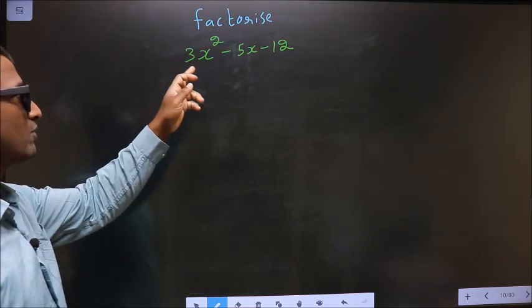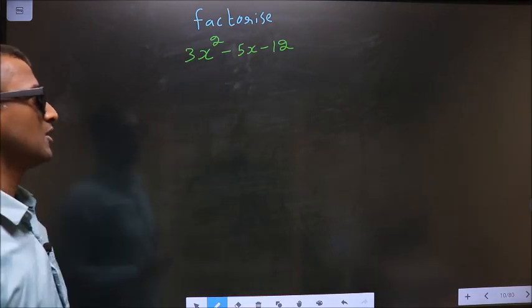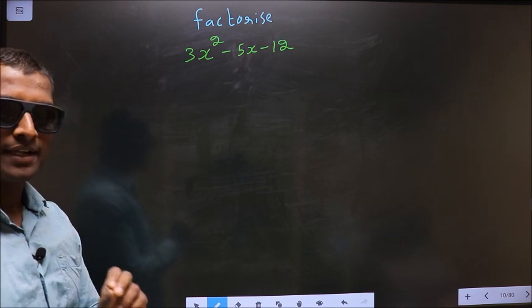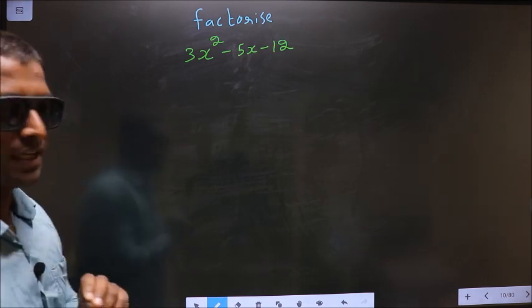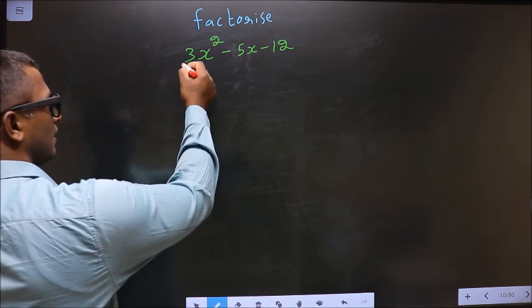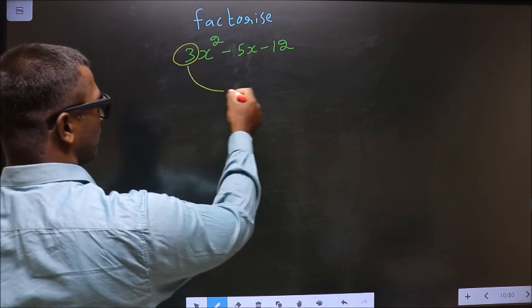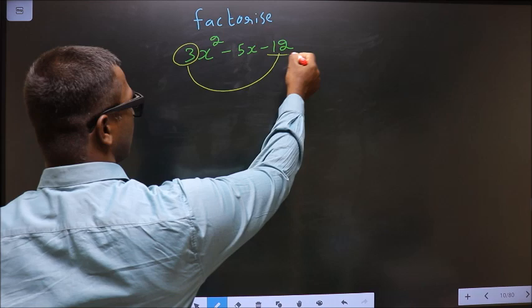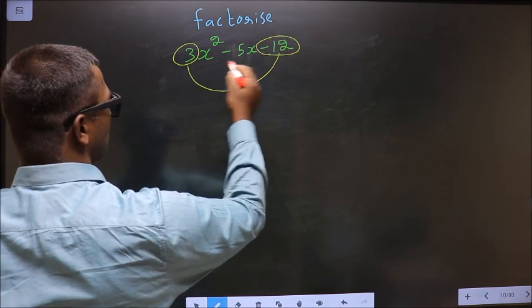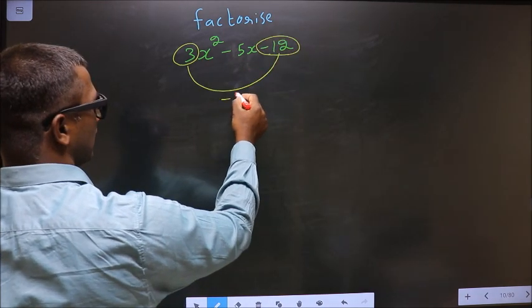Factorize 3x² - 5x - 12. To factorize, step 1: the coefficient of x², which is 3 here, should be multiplied to the constant, that is -12. So 3 into -12 is -36.